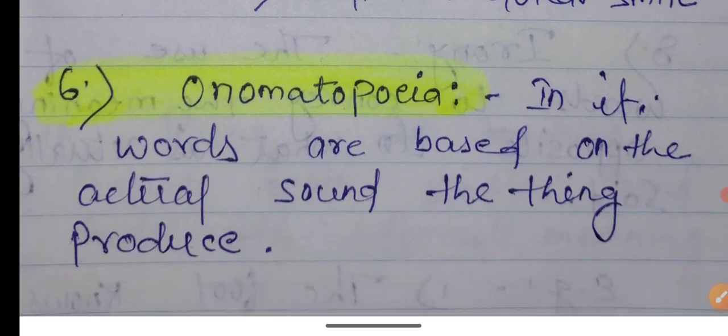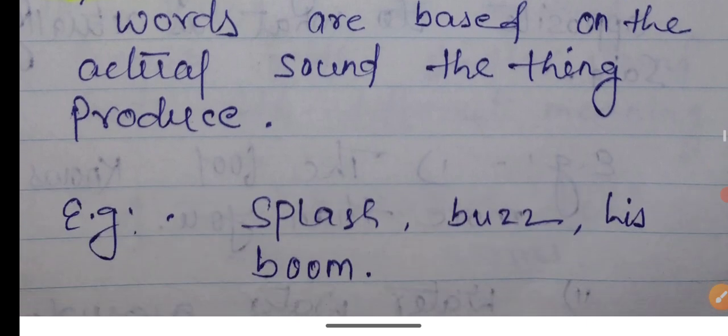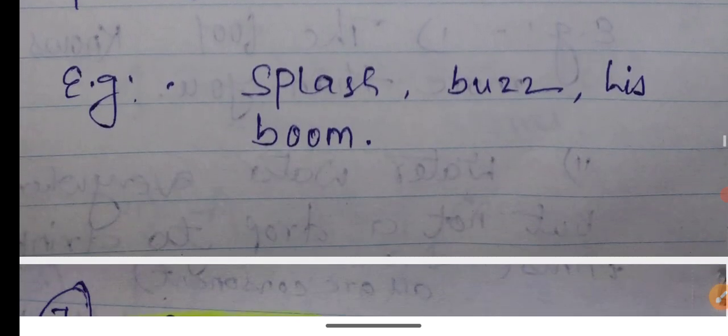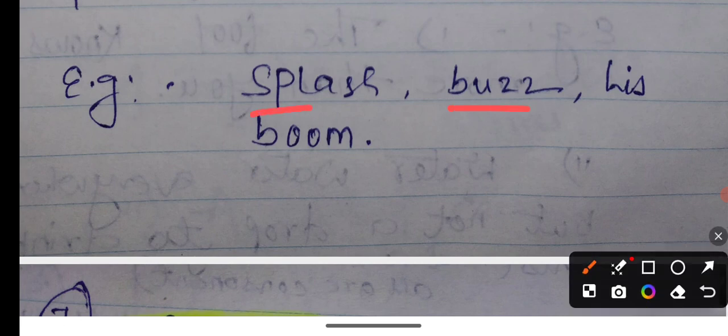Onomatopoeia. What is onomatopoeia? In it, words are based on the actual sound the thing produces. Sounds depend on the words. When sounds of particular words are created, it will be onomatopoeia. Splash, buzz, hiss, boom, like water drops, water dropping time, the sound produced, that is known as onomatopoeia.